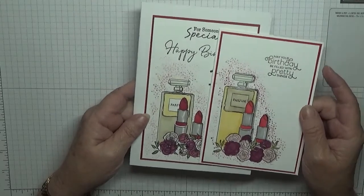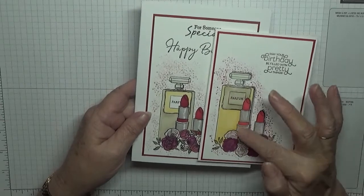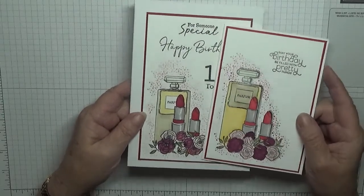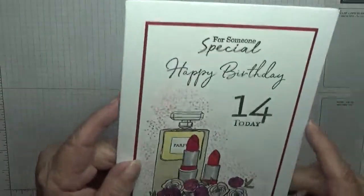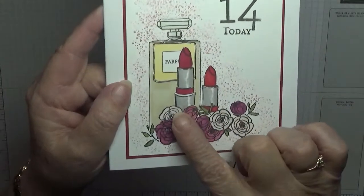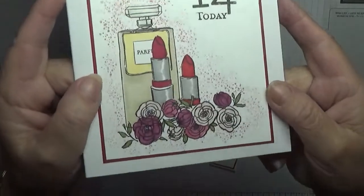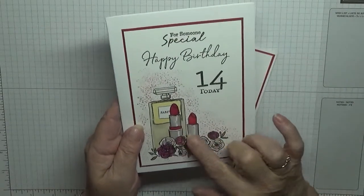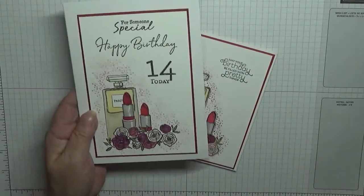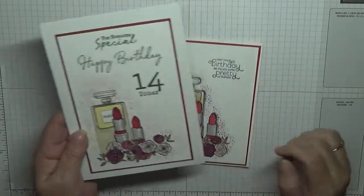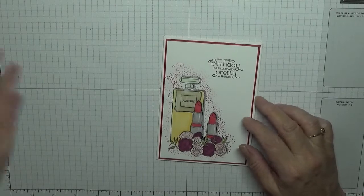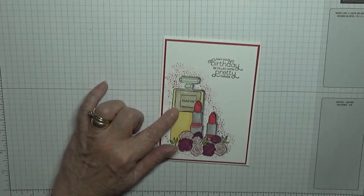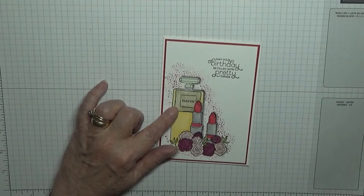I can see what I forgot to do, I forgot to put Wink of Stella on the lipstick. I can do that afterwards. It's not showing it up, but on the lipstick cover there's Wink of Stella. So that's where this idea come from. I'll show you how I made this longer, which reminds me I need a pen.